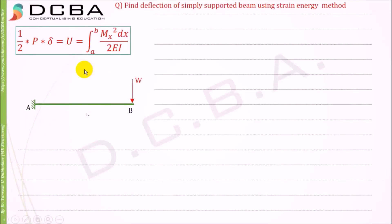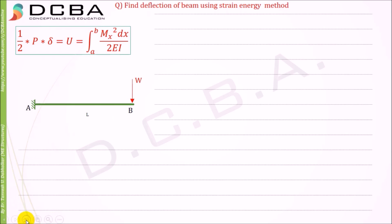Hello and welcome. This is the problem we are going to solve using the strain energy method. We have a cantilever beam and we need to find the deflection using the strain energy method. To apply this method, you need to have only a single point load — you cannot apply it for a UDL, UVL, or any distributed load. You need a concentrated point load or concentrated moment, and you can only find the deflection at the point where that load or moment is active.